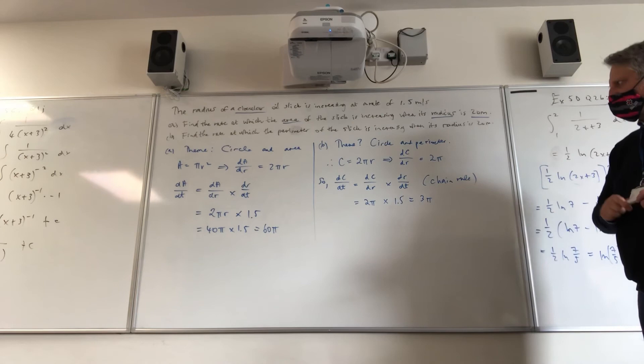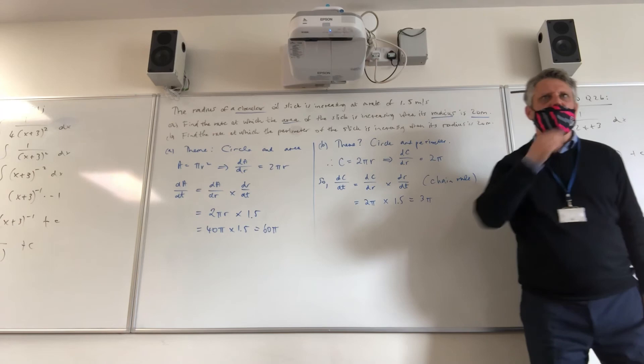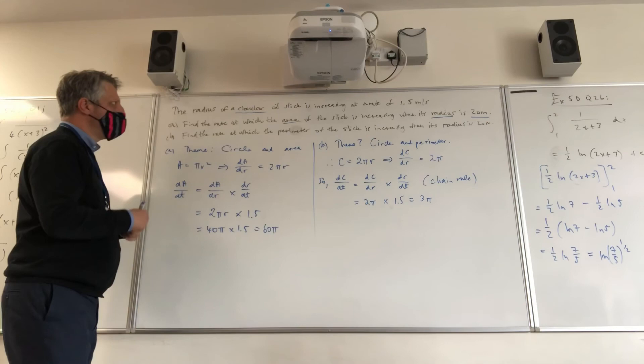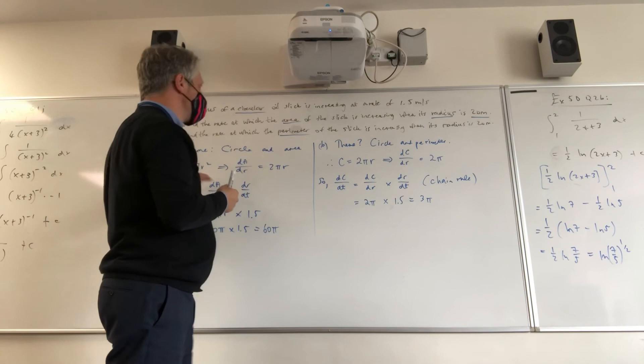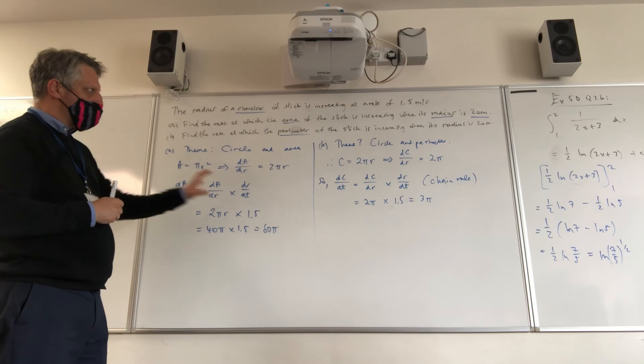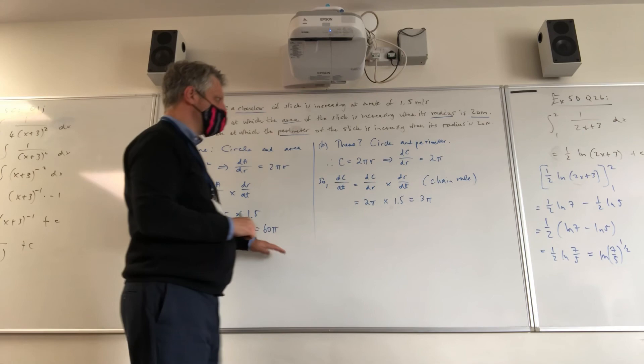So once you've got this one, this one is quite easy really, or should have been, to see the connection. So this particular question relied on our understanding of the fact that a circle would have an area of πr², sorry, πr² or 2πr, depending on whether area or circumference. And then creating a chain using the information we've got. So 60π for your first answer, 3π for your second answer.